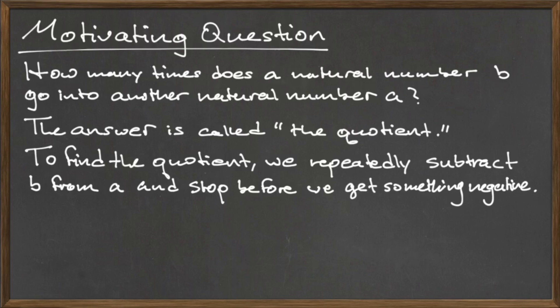This process of finding quotients and remainders is called the division of a by b. To illustrate this with an example, let's find the quotient and the remainder for the division of a equals 15 with b equals 5.